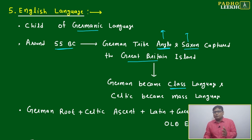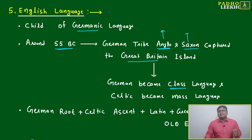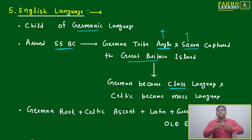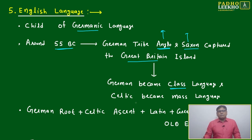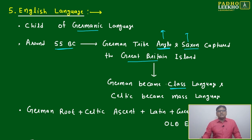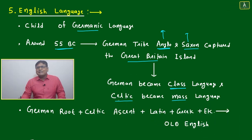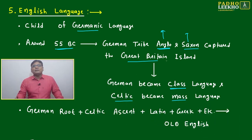Urdu has a very fixed format, like Sanskrit — some restrictions are there. Those restrictions were further removed and the vocabulary was made more lucid to create Hindi. In a similar way, Hindi has become the mass language now. English is a class language in the same way — Germanic people occupied the Great Britain island and Germanic became the class language.